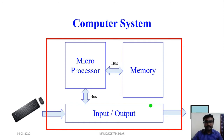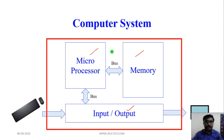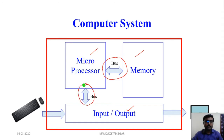As we have already seen, a computer system has a memory element, a microprocessor element, and input and output devices. The microprocessor and memory element can be interfaced using buses, and the input and output devices can also be connected to the microprocessor using buses.